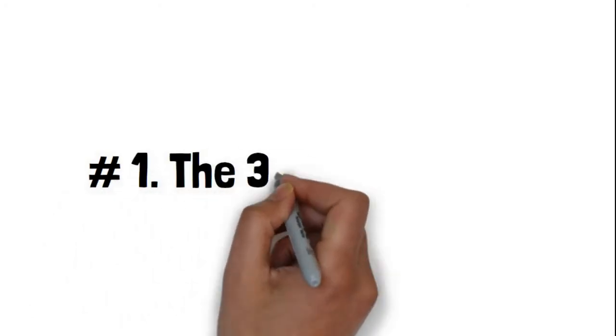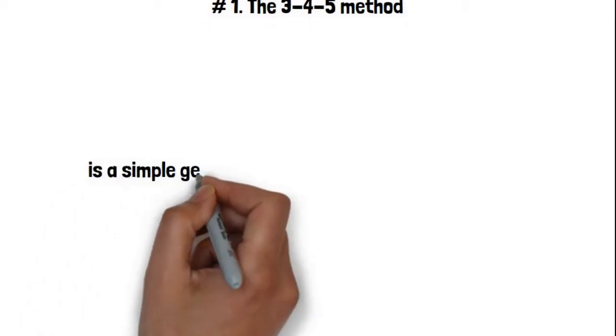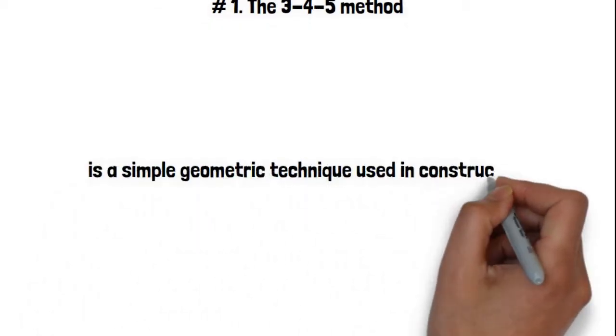Now let us start with the 3-4-5 method. The 3-4-5 method is a simple geometric technique used in construction to ensure that a corner is a perfect right angle, or 90 degrees.